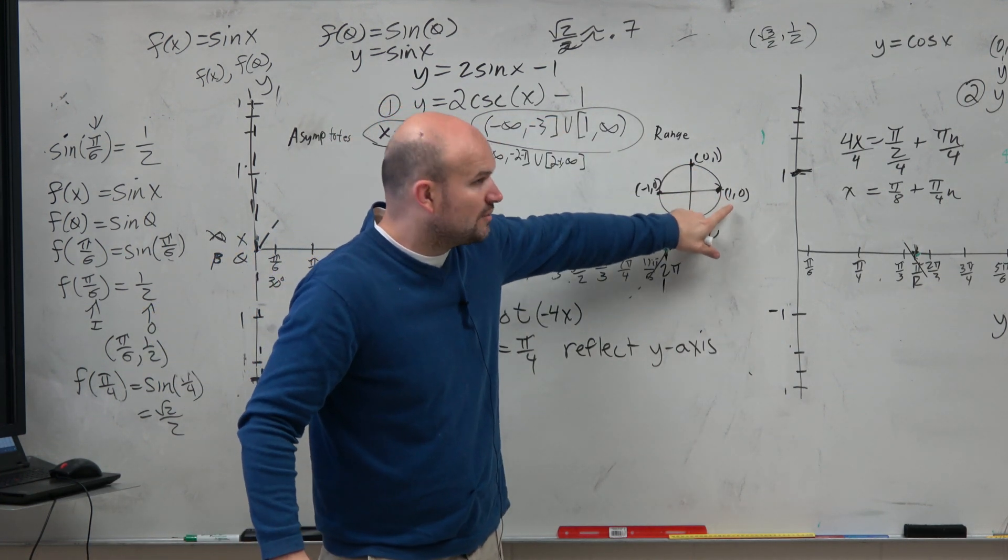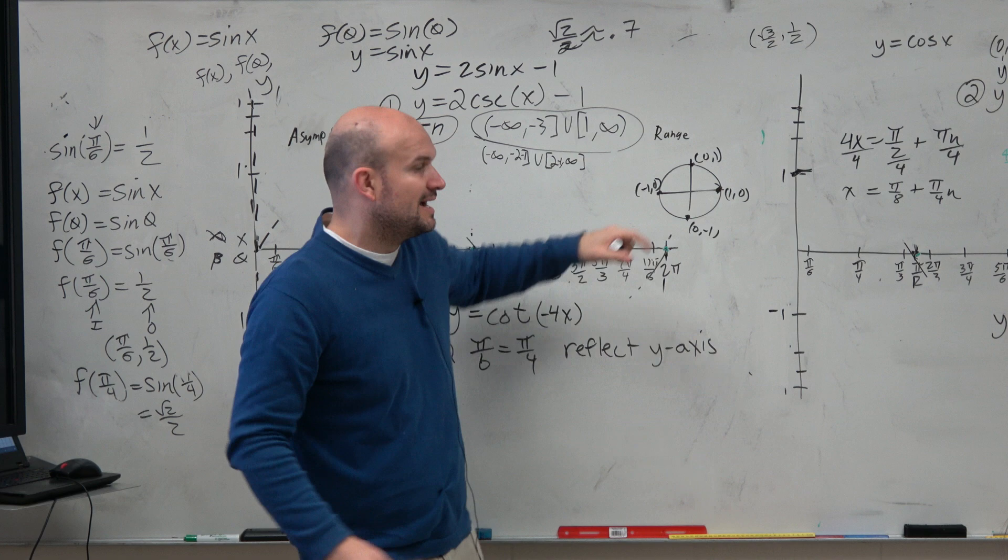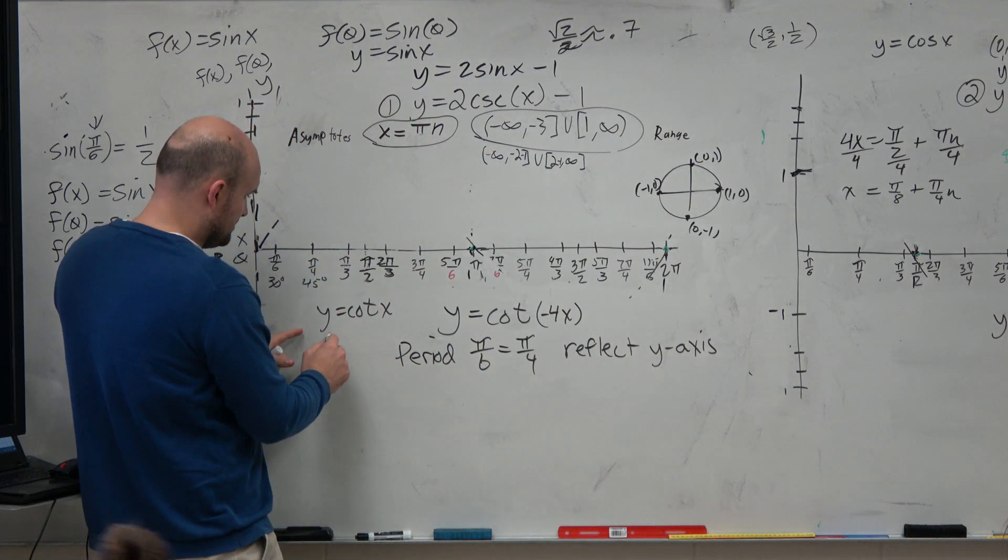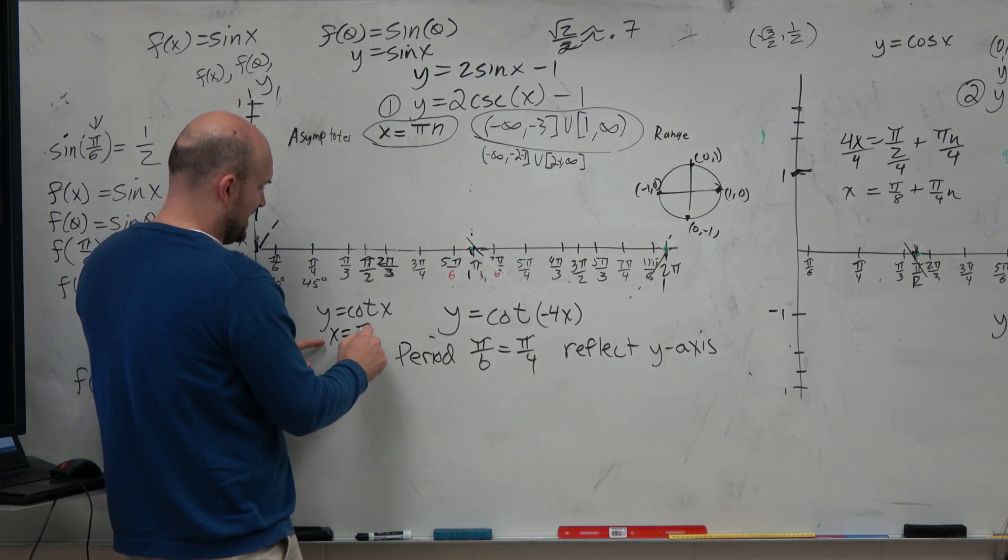And I can see that x over y is undefined at 0 and pi. And if you look at the notes, my asymptotes occur at x equals pi n.